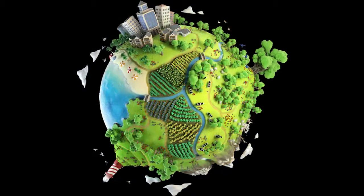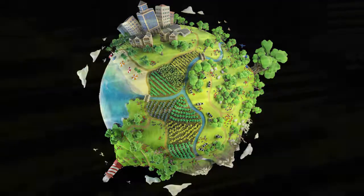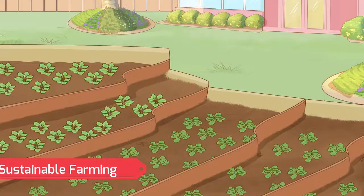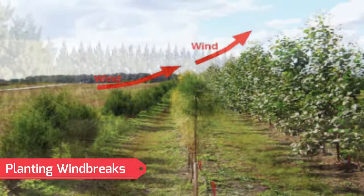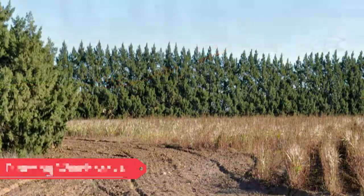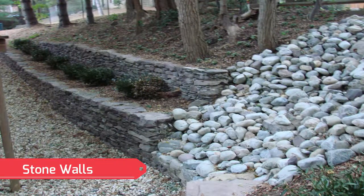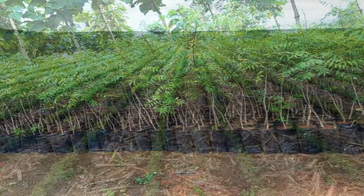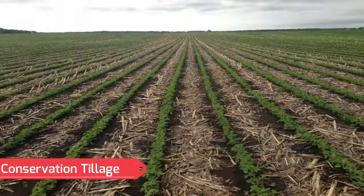Despite the fact that human activities have accelerated soil erosion, there are ways of repairing the damage we have created, from reforestation and windbreaks to stone walls or more sustainable agriculture techniques. 1. Stopping soil erosion via sustainable farming practices. 2. Protecting the soil by planting windbreaks. 3. Stone walls to prevent soil erosion. 4. Reforestation helps protect soils. 5. Conservation tillage and soil erosion.